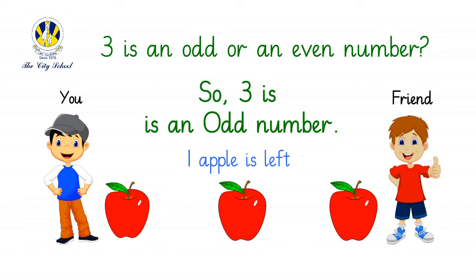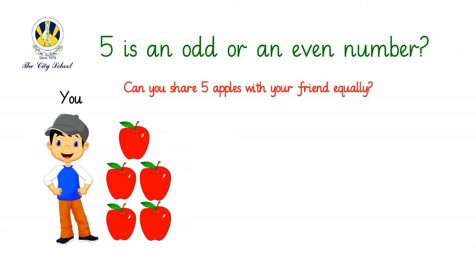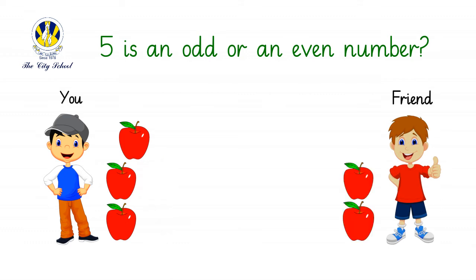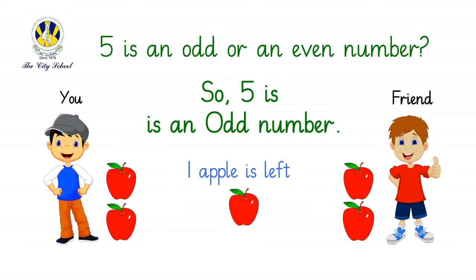Let's take another example. Let's see if five is an odd or an even number. Can you share five apples with your friend equally? Let's try. Oh, you can't — one apple is left. So five is an odd number, or five apples are an odd number of apples.